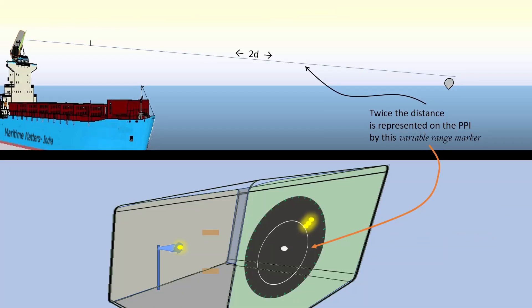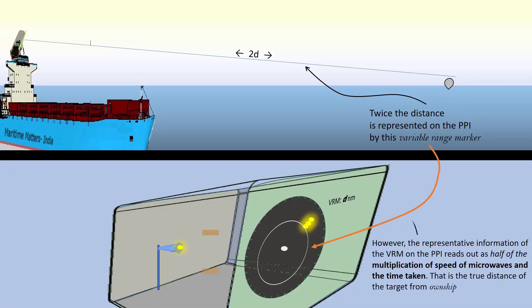On the PPI, the distance between the inner edge of the paint represents a distance which is twice of the actual distance between the target and the own ship. However, the representative information of the VRM on the PPI reads out as half of the multiplication of speed of microwaves and the time taken. That is the true distance of the target from the own ship.